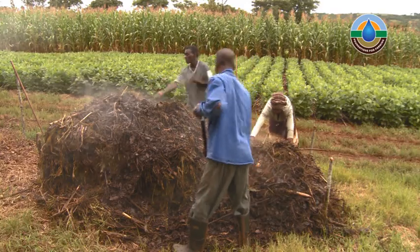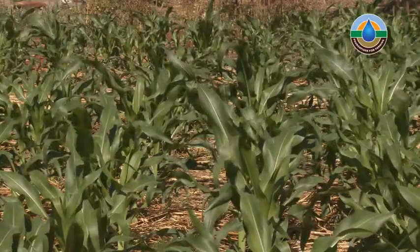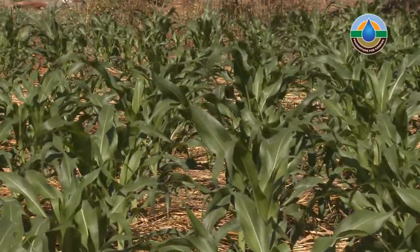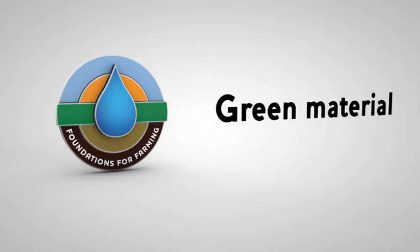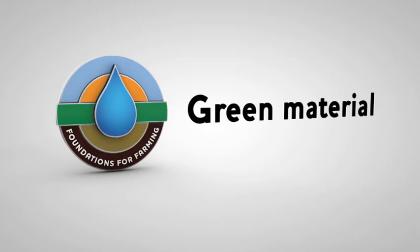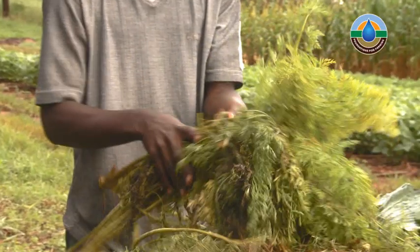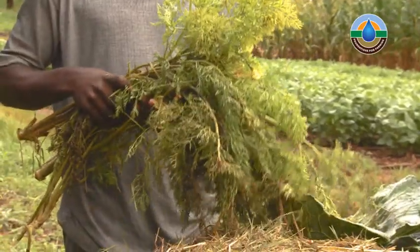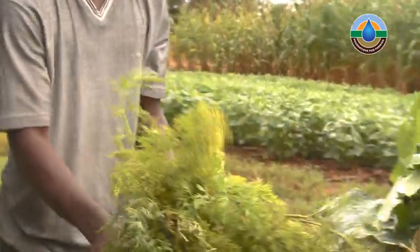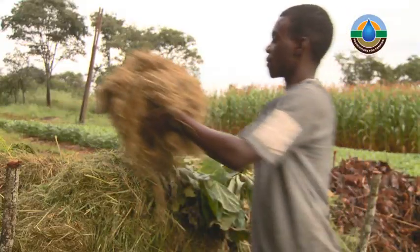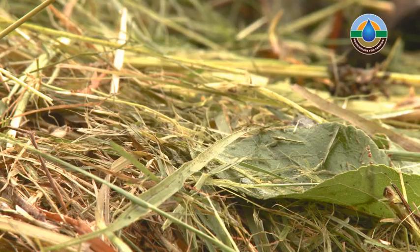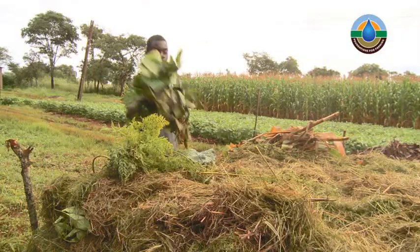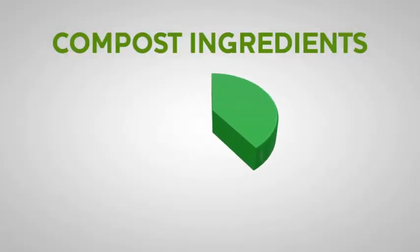It will be enough to sustain a quarter hectare of maize. Green materials are important for our compost because they contain sugars which are used to produce more bacteria. Any green material is good, even if it has already dried or contains seeds. Examples are grass, leaves, and weeds. The green material should make up 40% of the total material.